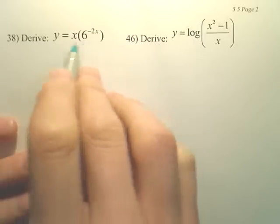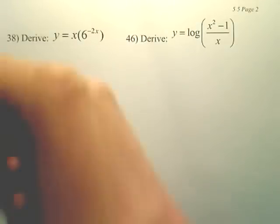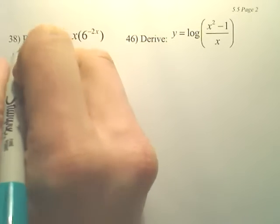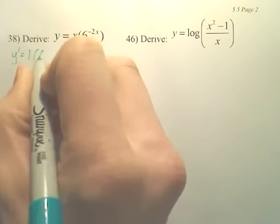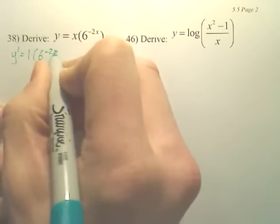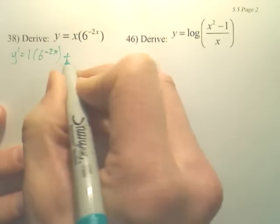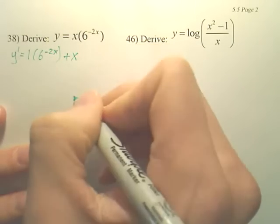If I'm going to derive this, it is a product rule. So the derivative of x is 1, and then let's 6 to the negative 2x, plus leave the x.